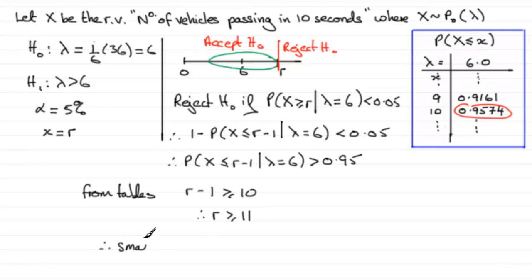Therefore, the smallest number of vehicles has to be 11. Vehicles equals 11. So, if the traffic officer sees 11 or more vehicles passing in a 10-second interval, then that traffic officer is going to have to implement speed restrictions.